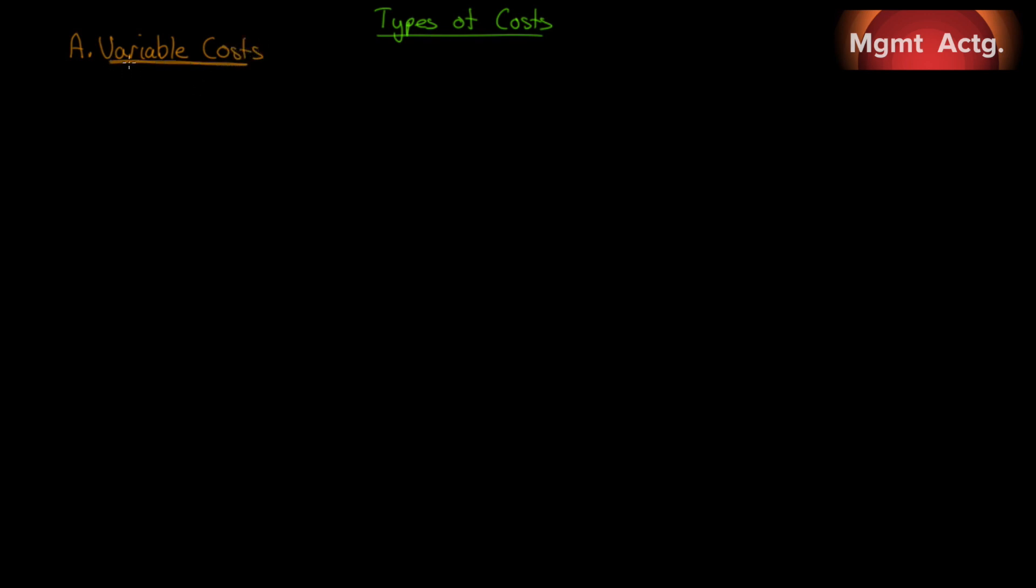So let's begin with our variable costs. We briefly introduced these back in Chapter 2, but let's redraw them. You know that a variable cost looks like this. It's kind of a relationship between the volume or activity and the total cost. Every extra unit we add or every extra hour we work incurs an extra cost. It's variable with the level of activity, but it is constant per unit.